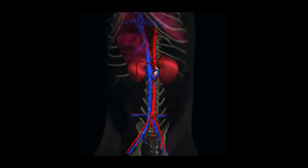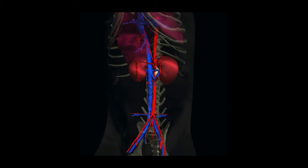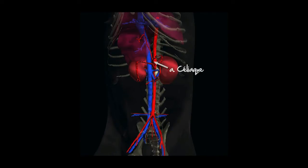On retrouve aussi, tout près de la surrénale gauche, l'origine de l'artère mésentérique crâniale sur l'aorte, puis de l'artère céliaque tout juste crânialement, laquelle donne les artères spléniques et hépatiques.